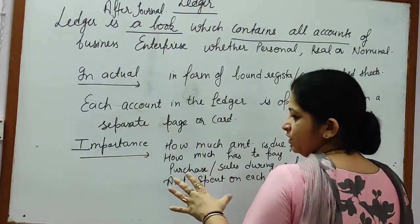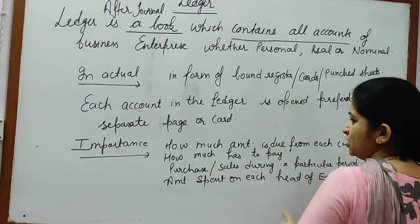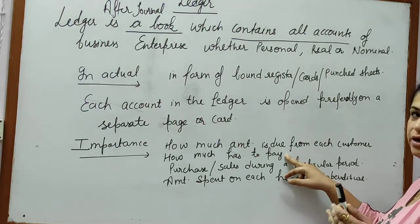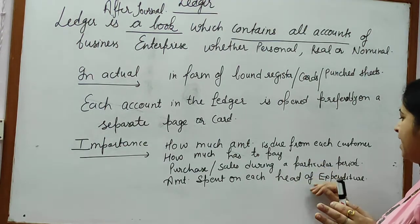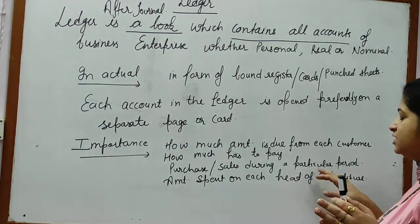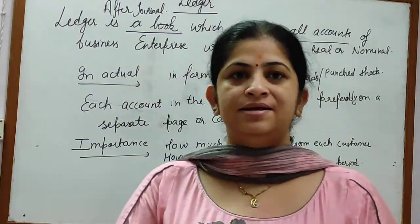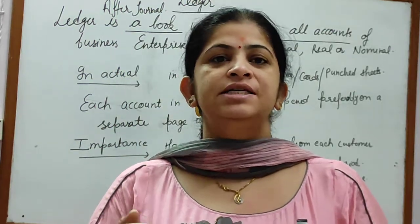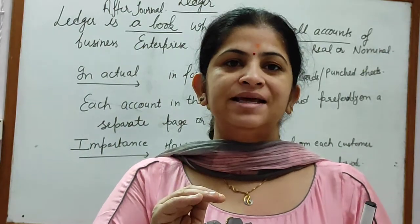What is the importance of Ledger? How much amount is due from a customer? How much has to be paid to the supplier? What are the purchases? What are the sales? The amount spent on each head of expenditure — salaries, wages, stock — closing stock, purchase returns, sales returns. All these balances can be found from the Ledger.